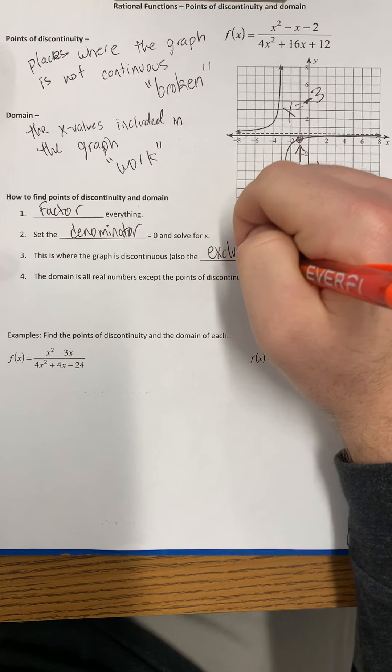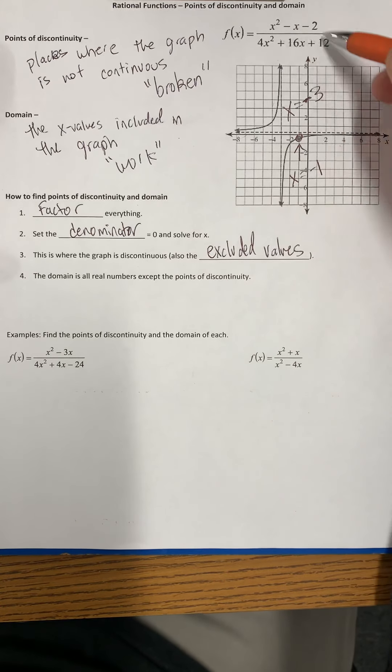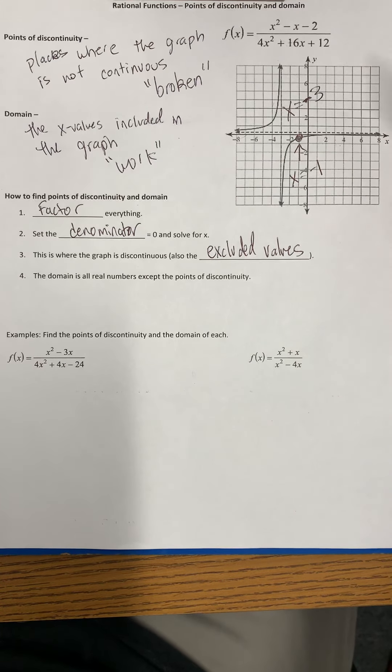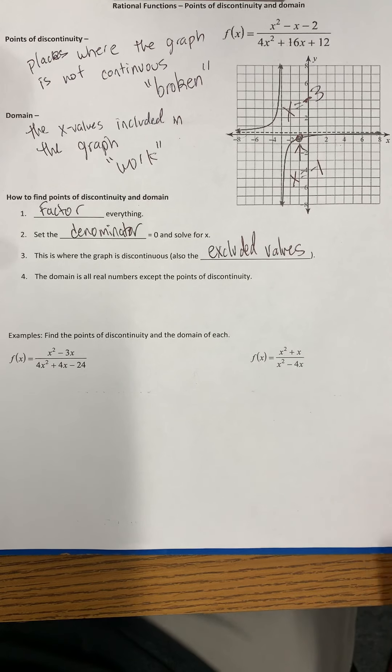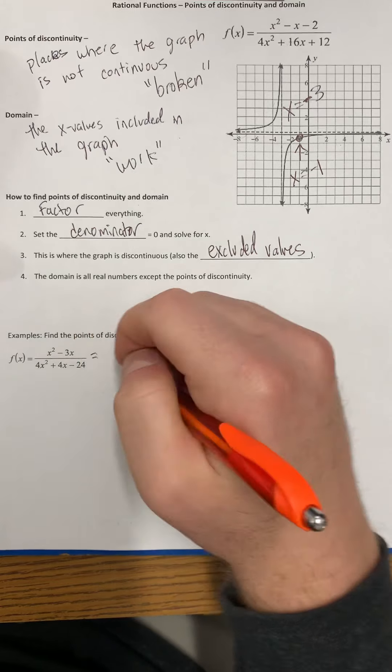The points of discontinuity are also the excluded values. Remember we thought about excluded values before—excluded values were the ones that gave us zero in the denominator. When we refer to those on a graph, that's where the graph would end up being broken. The domain is all real numbers except the points of discontinuity.